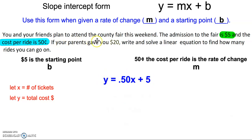If our parents gave us $20, that's how much we can spend total. So we can't spend more than that. The total cost would be $20 for us to go to the fair because we couldn't spend over that $20.